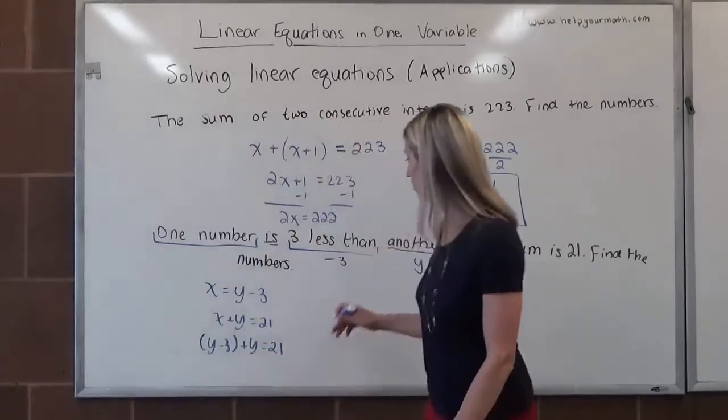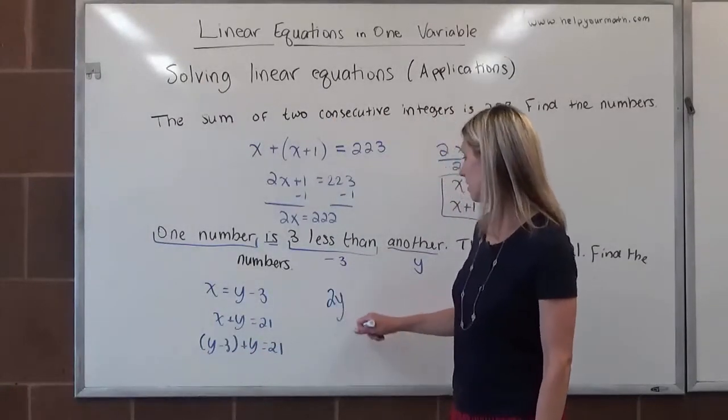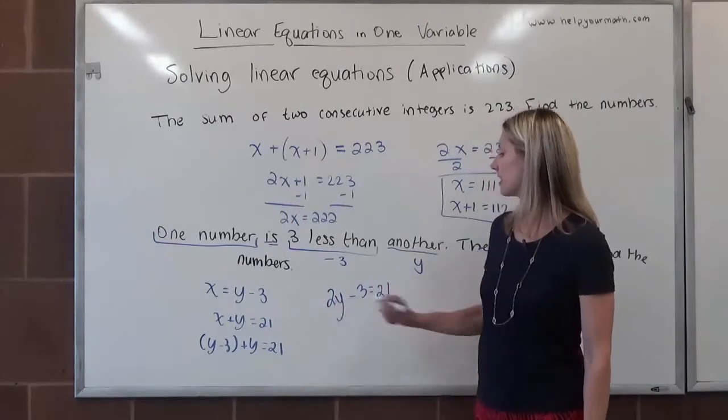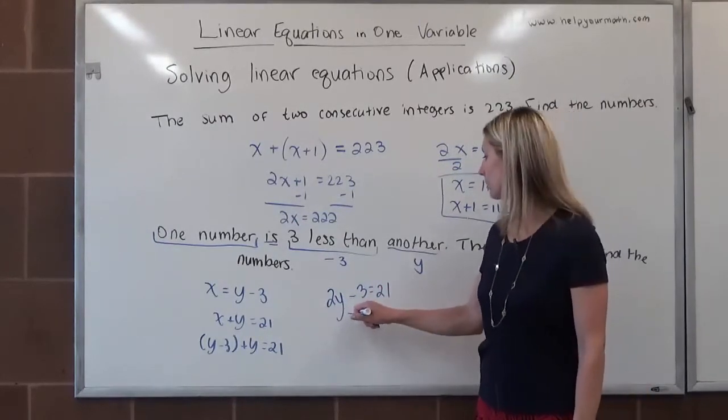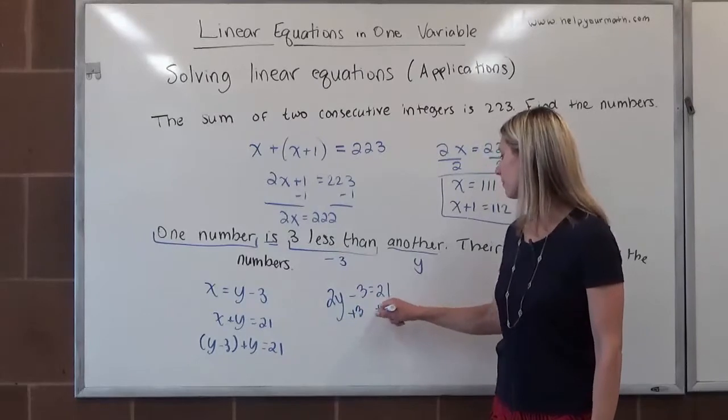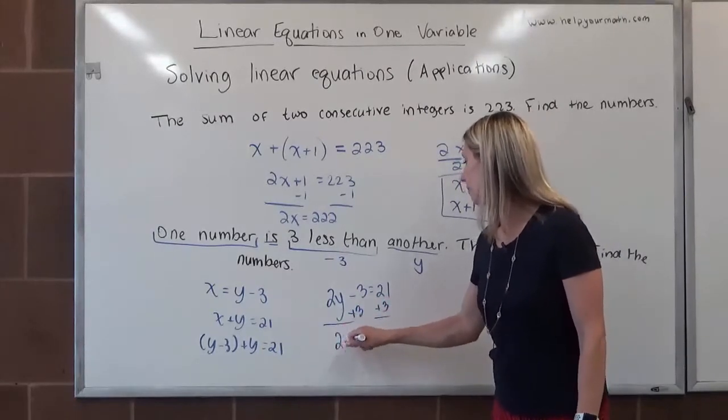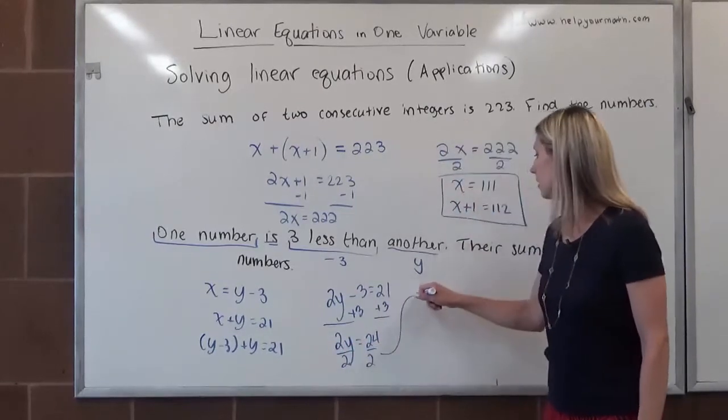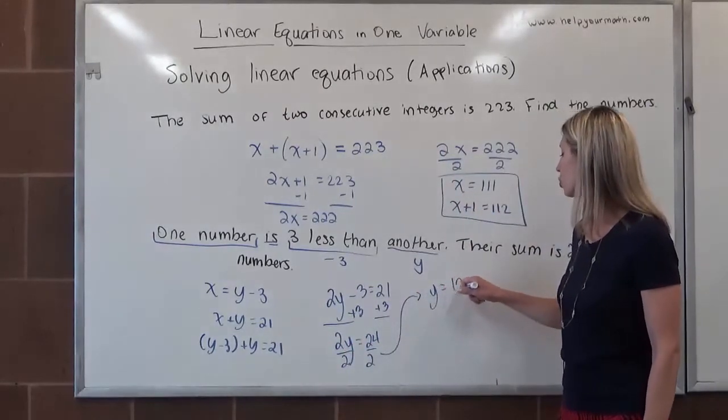We're going to combine like terms. y plus y is 2y. That would be 2y minus 3 equals 21. Let's get y by itself, we'll add 3 to both sides. Then we get 2y equals 24. To get y by itself, we'll divide by 2. And we get y equals 12.